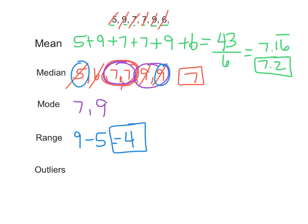And then finally, to find the outliers, it would be any numbers that are way bigger or smaller than the rest of the numbers. The smallest number is 5 and the biggest is 9, and neither of them are really far away from the other numbers in the data set. So I would say there are no outliers in this data set.